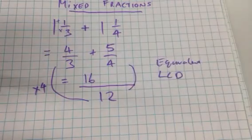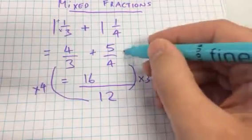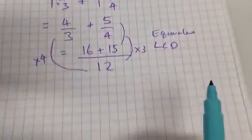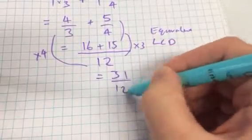What do I do to the four to get it to twelve? Times it by three. Times it by three. So what do I multiply that five by? Seven. And it becomes? Fifteen. So now, sixteen and fifteen added together is? Thirty-one. Thirty-one over twelve.